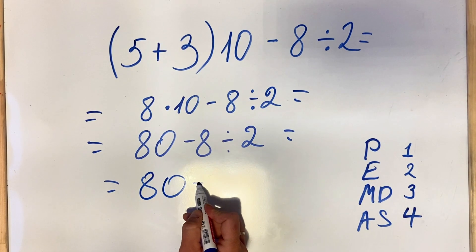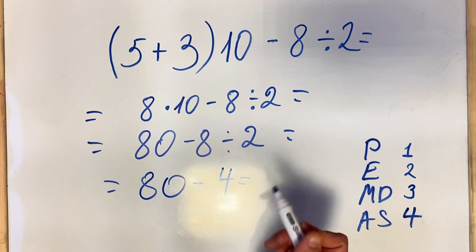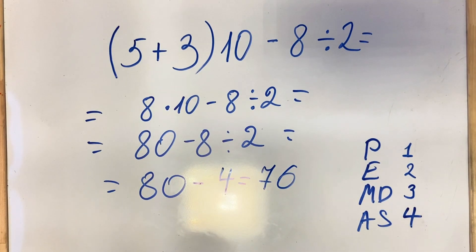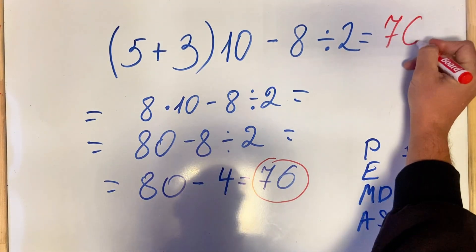What we get is 80 minus 8 divided by 2 is 4, and the result is 76. So this is the correct result, we get 76.